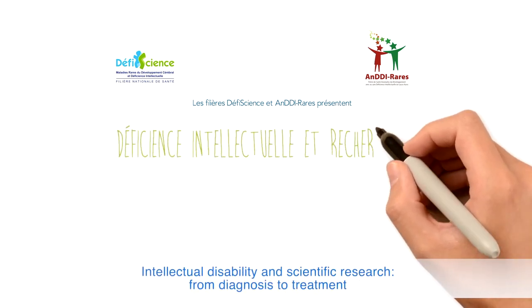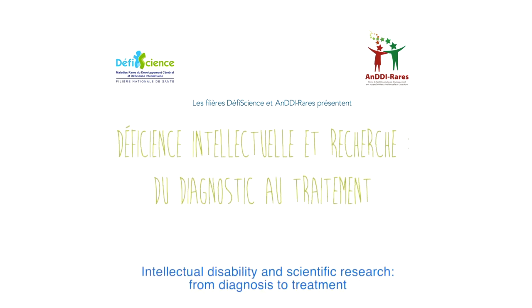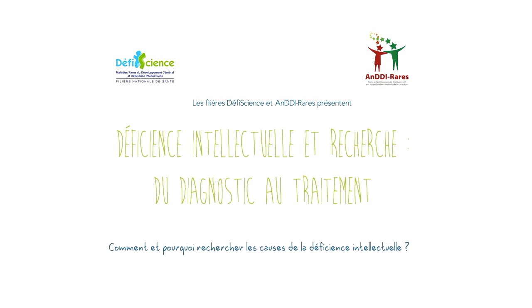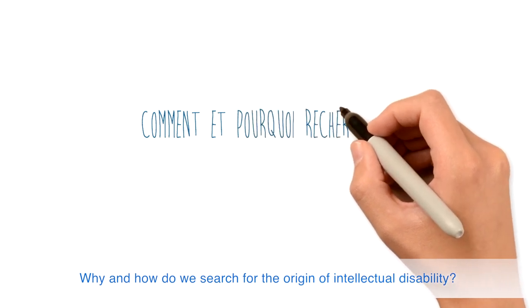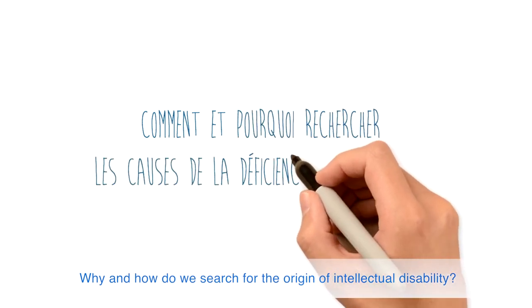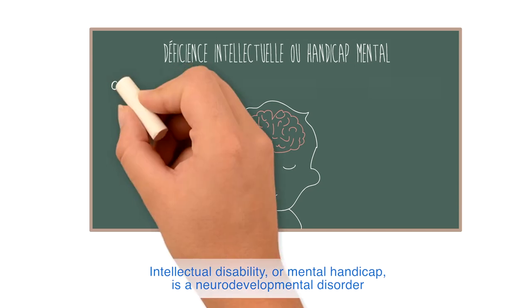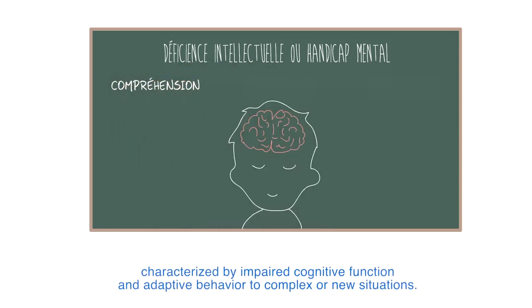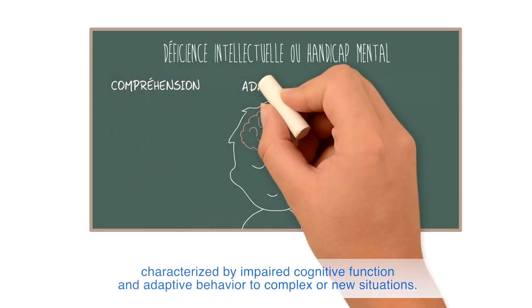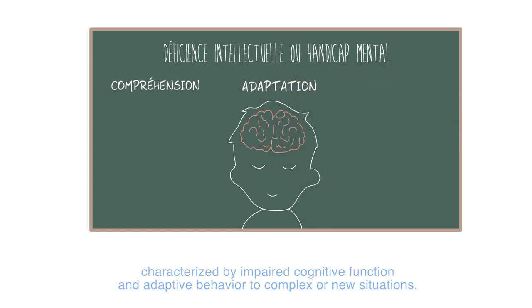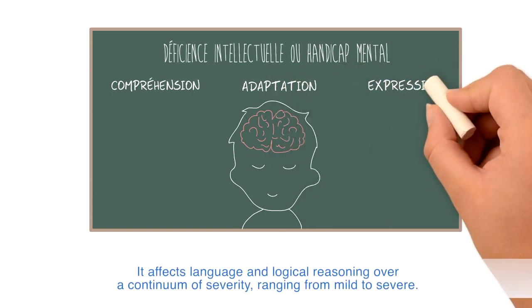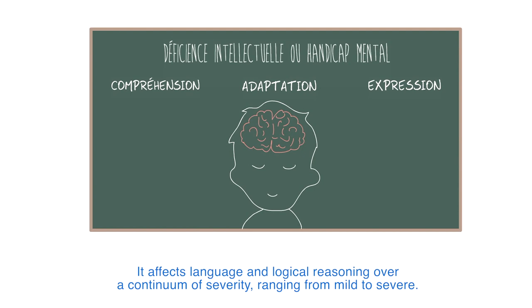Intellectual disability and scientific research: from diagnosis to treatment. Why and how do we search for the origin of intellectual disability? Intellectual disability, or mental handicap, is a neurodevelopmental disorder characterized by impaired cognitive function and adaptive behavior to complex or new situations. It affects language and logical reasoning over a continuum of severity, ranging from mild to severe.